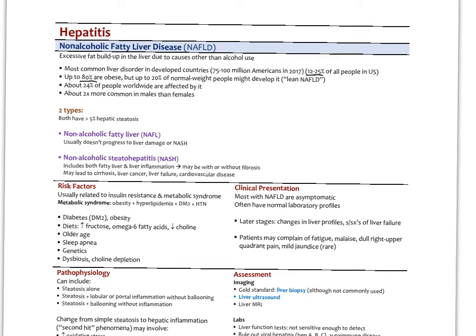The numbers are actually a little higher in different populations. Pediatric populations, it goes over 30%. Up to 80% of these patients are obese. But it's important to remember that about 20% of normal weight people, people with normal BMI, we call that lean NAFLD. I've seen a number of those patients develop it as well. We think up to a quarter of the people worldwide are affected by it and it's twice as common in males than in females.